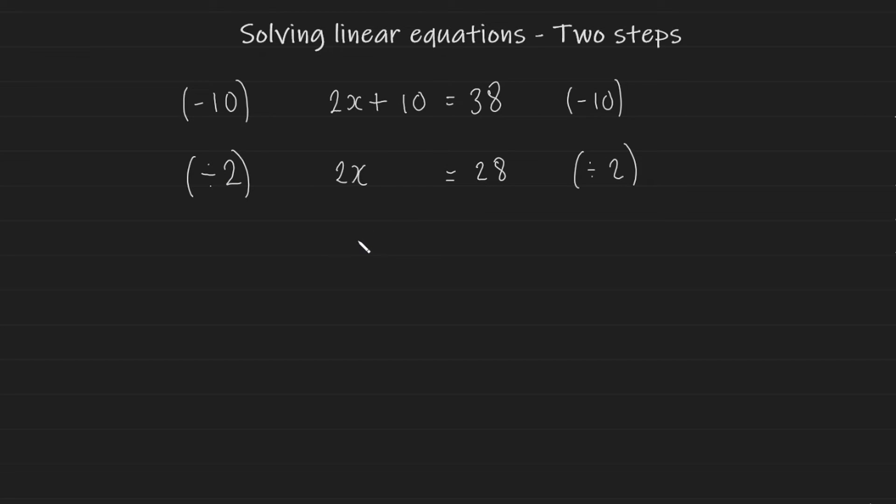Okay, so 2 divided by 2 gives us 1. So most of you might be thinking we can write 1x. You don't need to write 1x, you could just write x and it's the same thing as 1x. This is the preferred way of writing it. So then we have x and on the other side we have 28 divided by 2 which will give us 14. And this is your answer. The unknown is equal to 14.